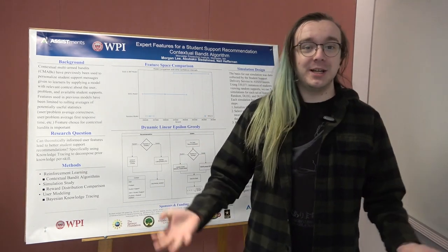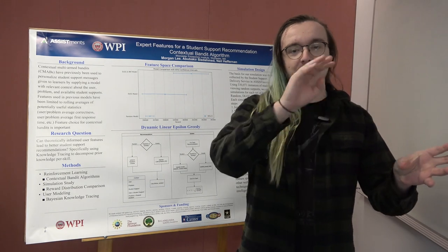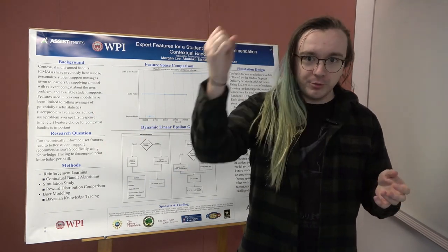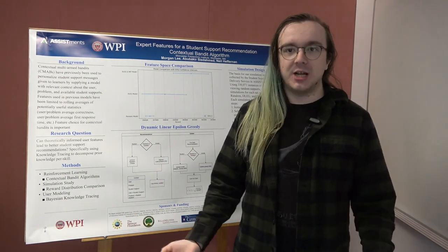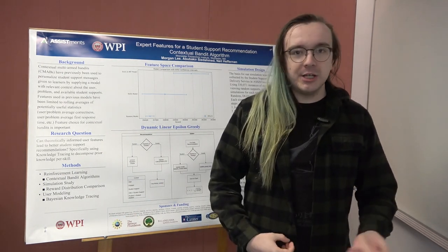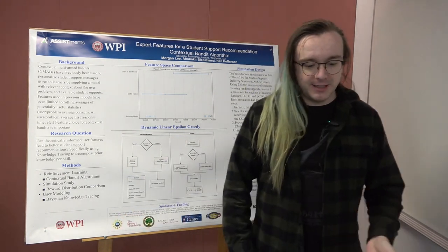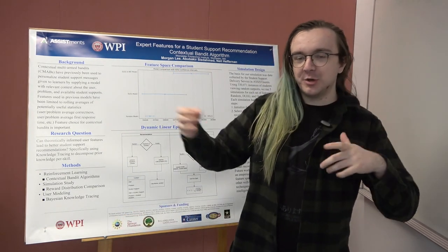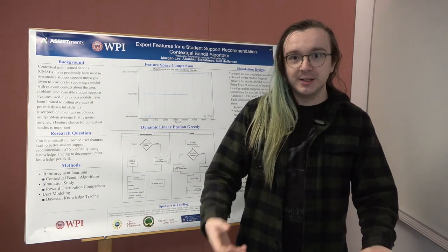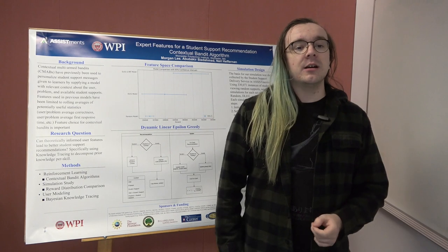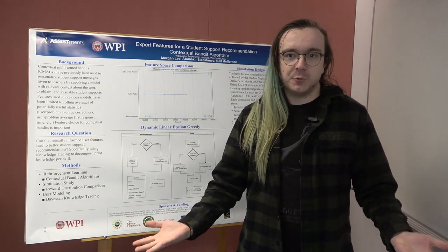A contextual bandit algorithm — imagine you are in a casino. There are three slot machines right in front of you. You can pull the arm on each one and each has a different chance of giving you the jackpot. How do you decide which slot machine to go for? The general idea is you pull each slot machine arm a predetermined number of times to figure out which one is more likely to give you the jackpot and then you go with that one. That is the multi-armed bandit problem in reinforcement learning.